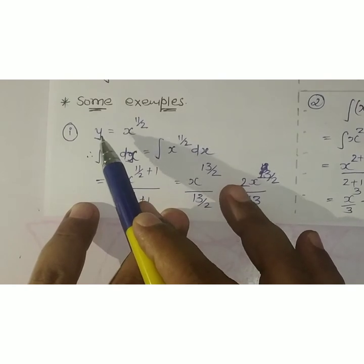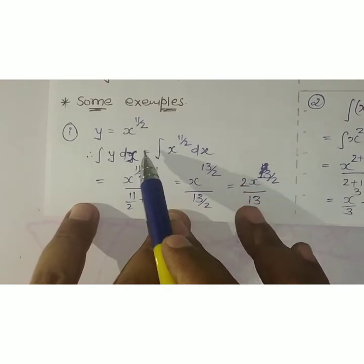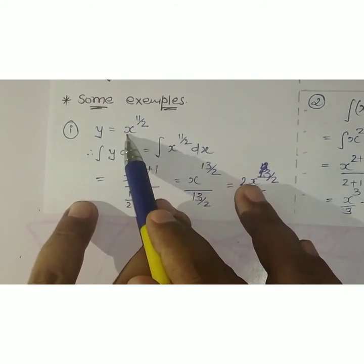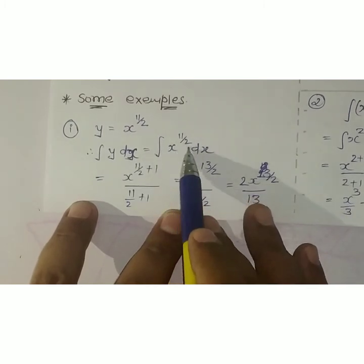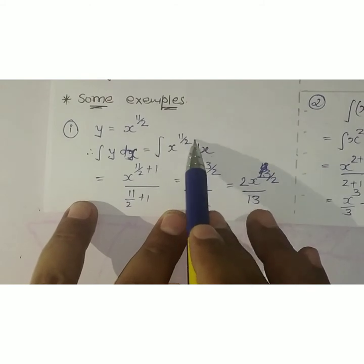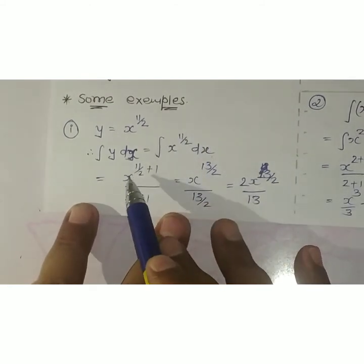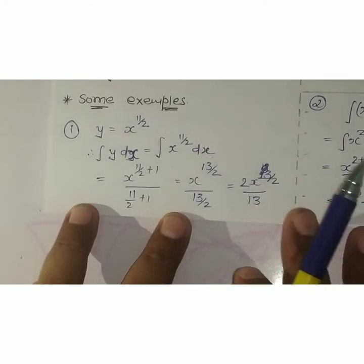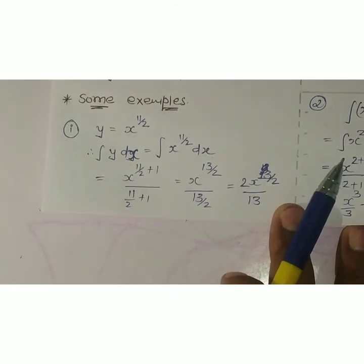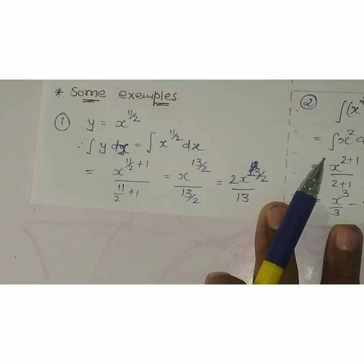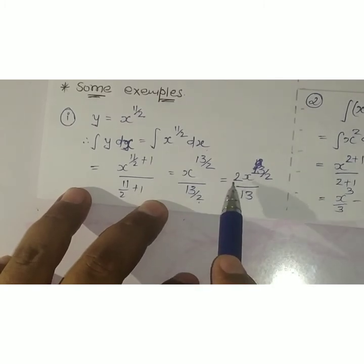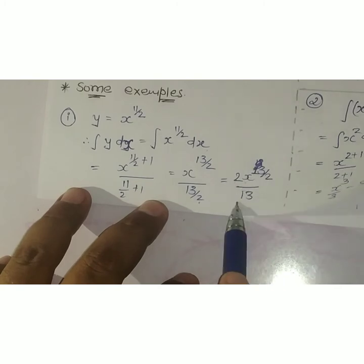Example: y = x raised to 11/2. I need to integrate, so integral of y·dx = integral of x raised to (11/2) dx. Apply the power rule: x raised to (n+1) upon (n+1). So it becomes x raised to (11/2 + 1) upon (11/2 + 1) = x raised to (13/2) upon (13/2). Since dividing by 13/2 means multiplying by 2/13 in the numerator, the answer is 2x raised to (13/2) upon 13.